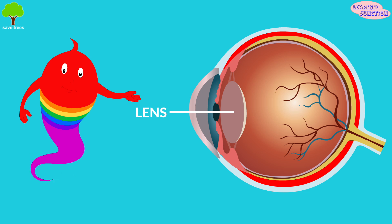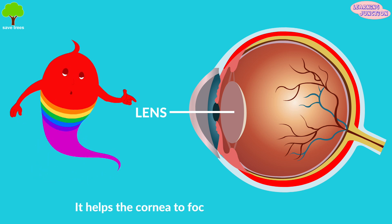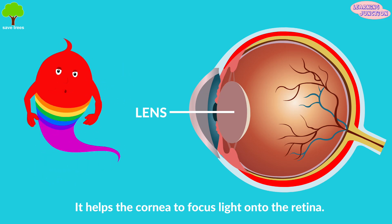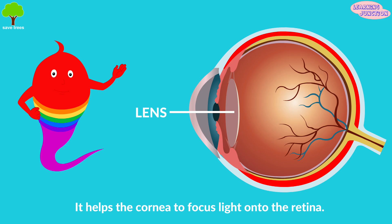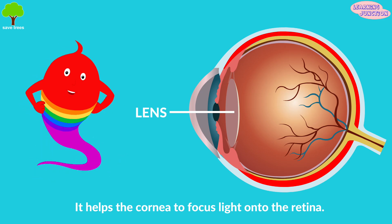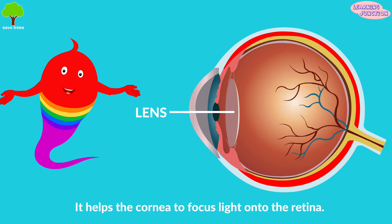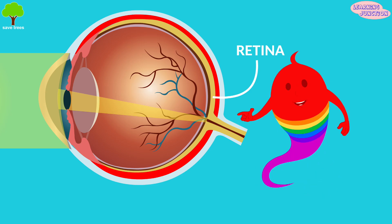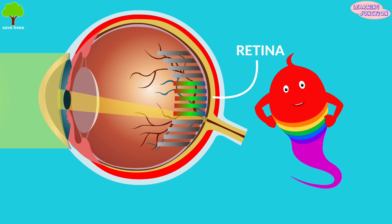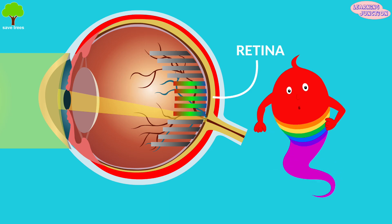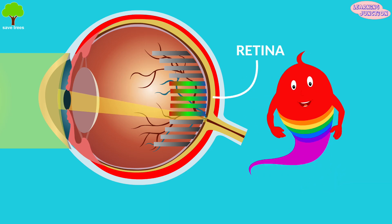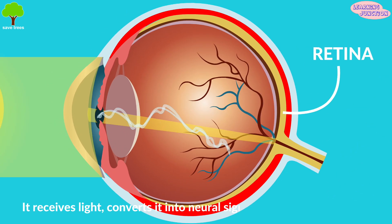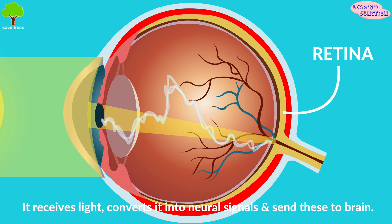The lens helps the cornea to focus light onto the retina. It gets thicker or thinner to make sure that the image on the retina is very clear. Retina. Retina has two lots of cells called rods to see black and white and cones to see the colors. They turn the picture into an electrical message for our brain.